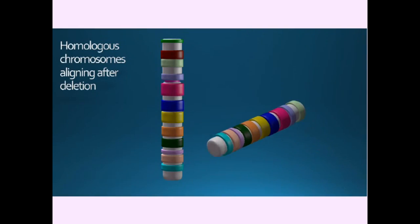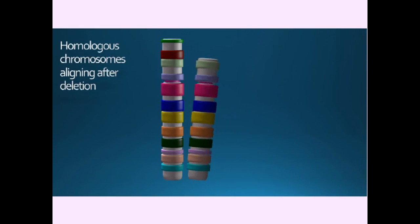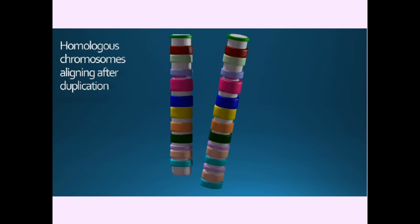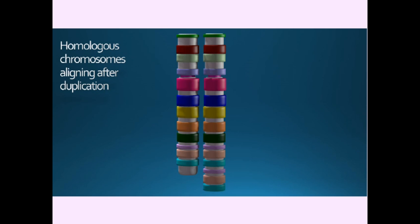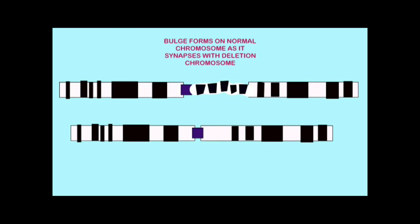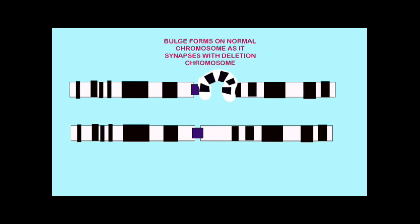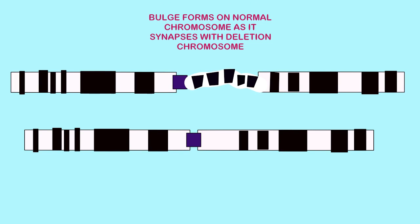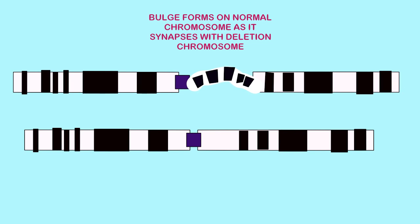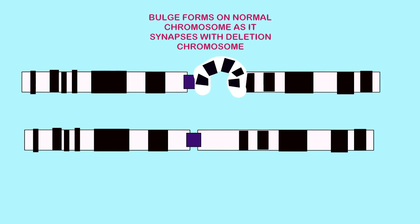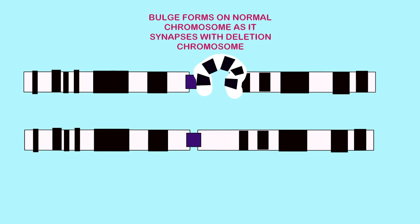Since homologous chromosomes align during meiosis, and matching sections of chromosomes undergo synapsis, any chromosomal changes which would make this less likely could potentially affect the fertility of the offspring.